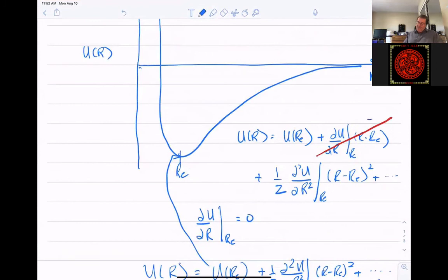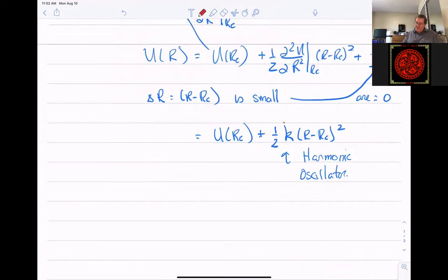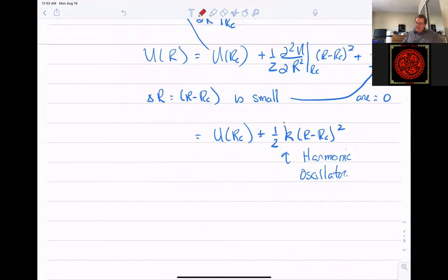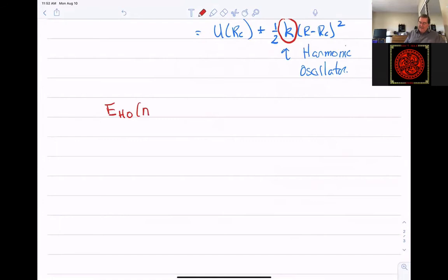If that's true, coming back up here, what I really need to do in order to calculate this K is just the second derivative of the potential at the minimum with respect to R. That is, that tells me the force constant. Now, what's nice about a harmonic oscillator? Well, a harmonic oscillator here, as a function of quantum number that I'll call N, looks like this: it looks like H bar omega times N plus one-half. N can be zero, one, two, on up to infinity.